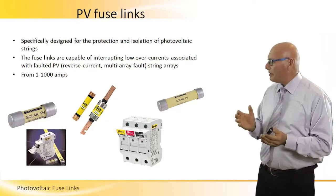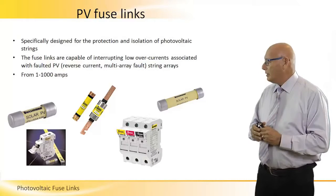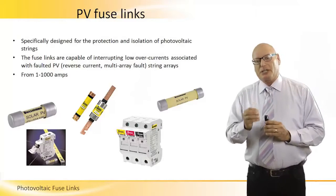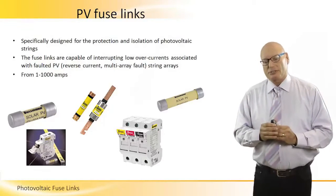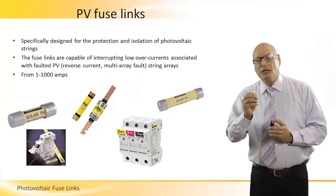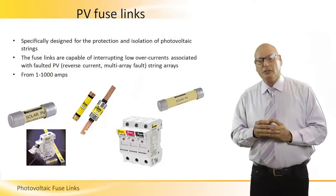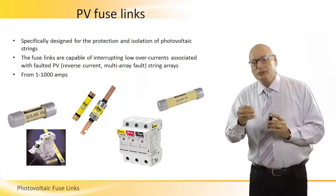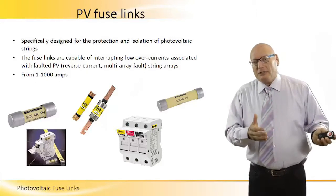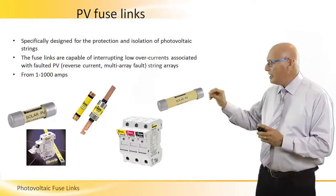We see some examples of fuse links for the PV industry. These are specifically designed for the protection and isolation of photovoltaic strings. The fuse links are capable of interrupting low overcurrent associated with faulted PV in the form of reverse current and multi-array fault. They vary from one amp to 1000 amps and are located within the SPD device itself.